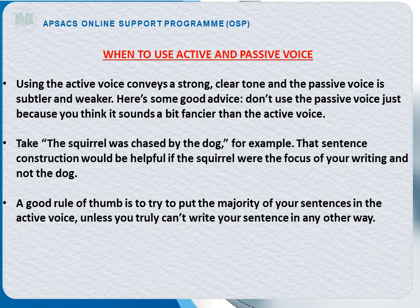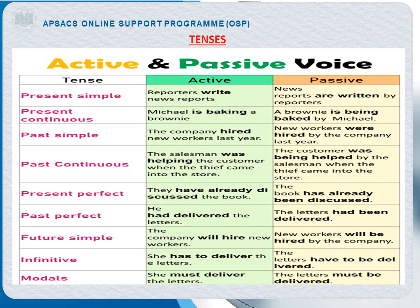Let's elaborate on the use of active and passive voice in different tenses. In simple present tense, the active form is: 'Reporters write news reports,' and the passive voice is: 'News reports are written by reporters.' In this sentence the subject became the object and the object became the subject. In present continuous tense: 'Michael is baking a brownie,' and its passive voice is: 'A brownie is being baked by Michael.'